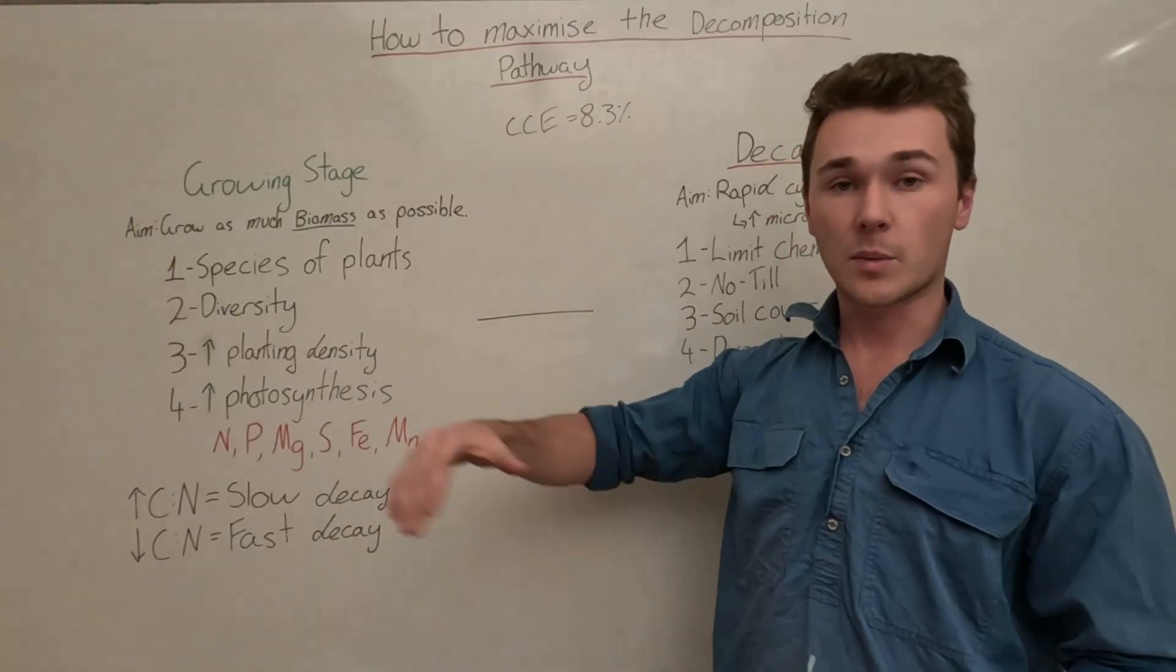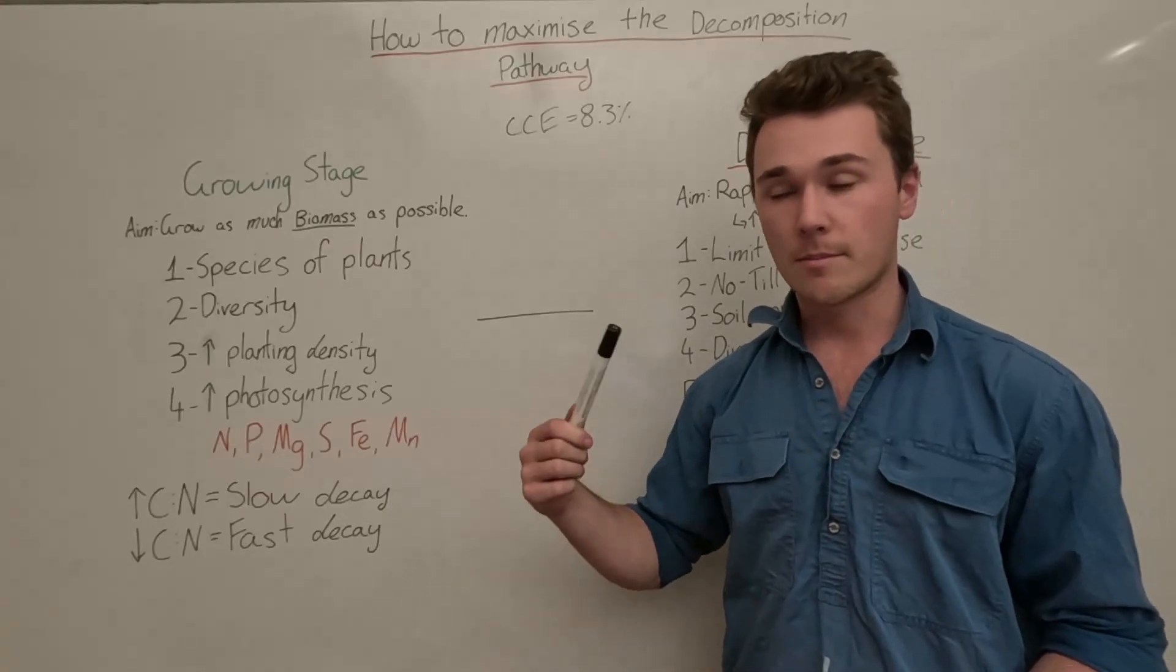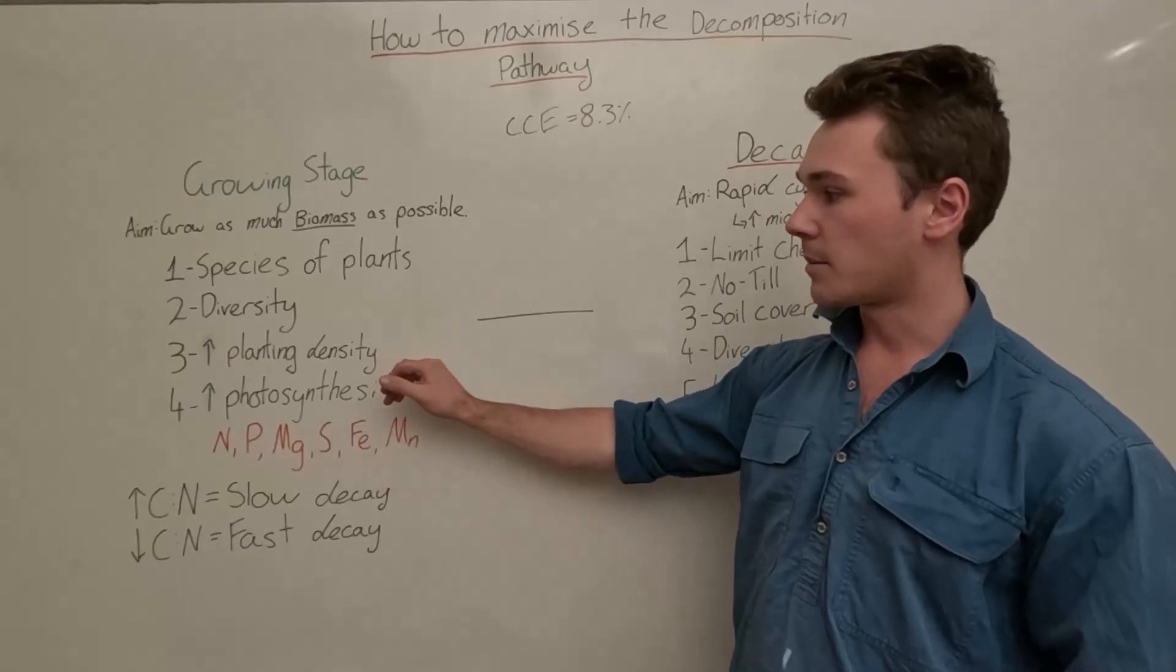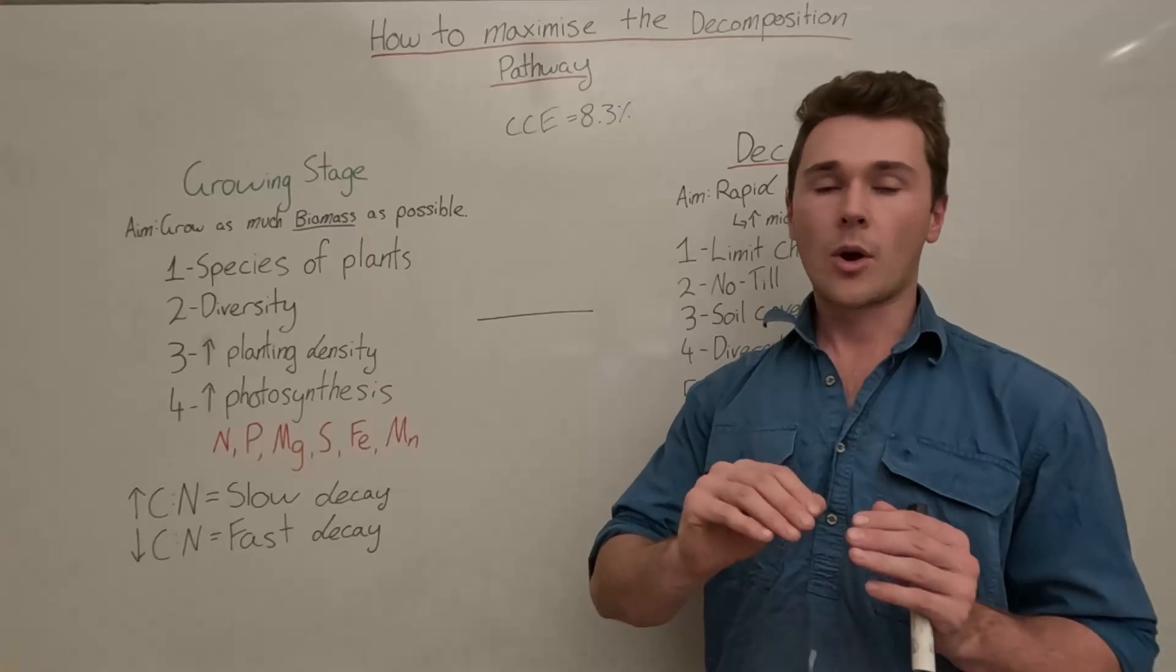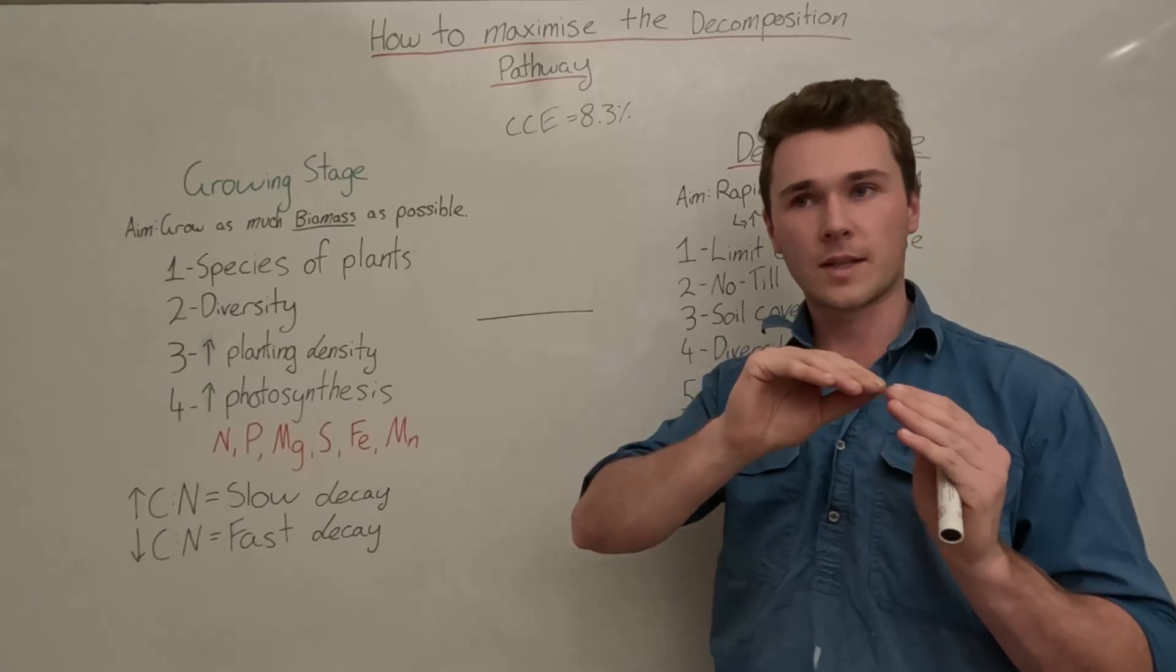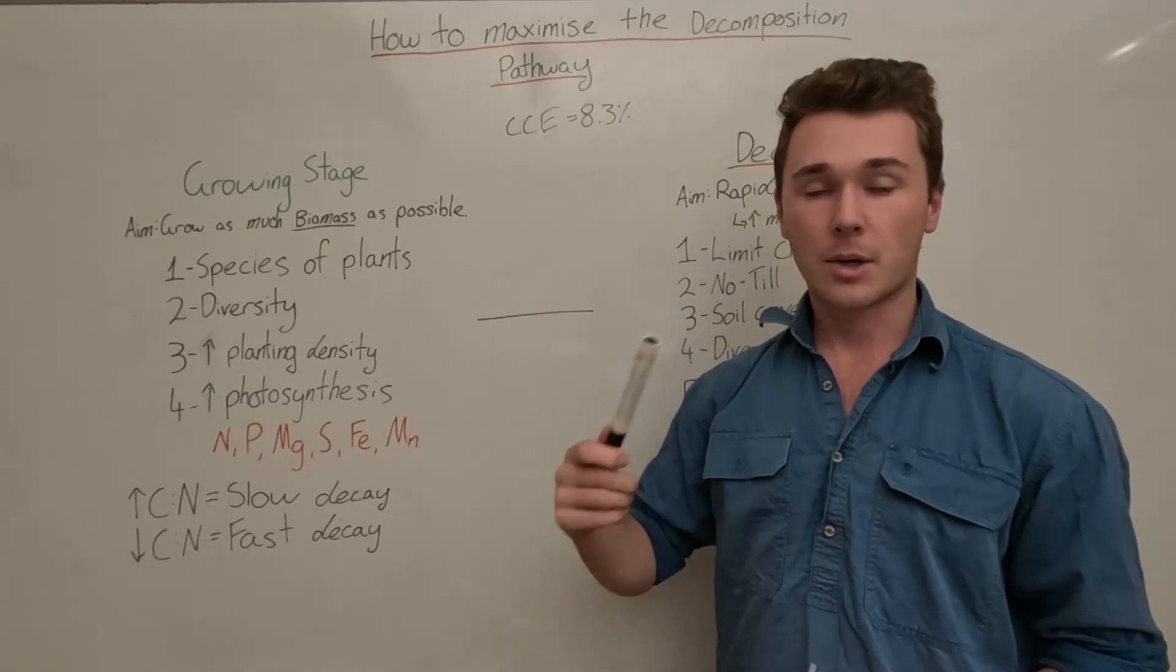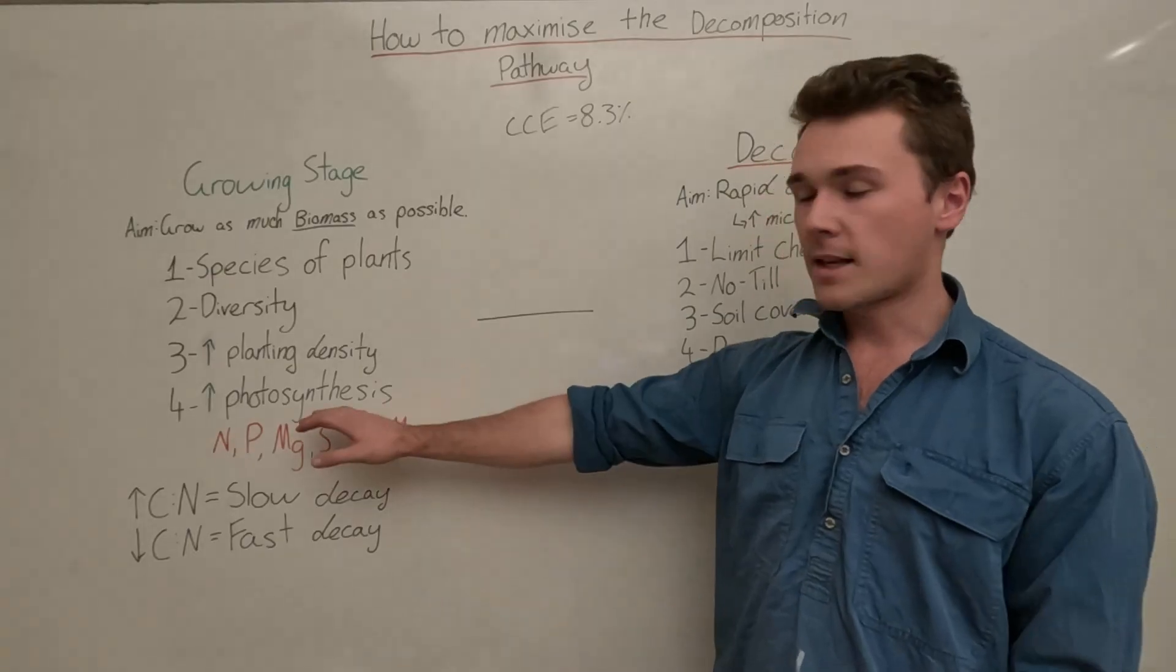When we're thinking about our cover crops, we want to make sure we have a really diverse cover crop that's going to increase the amount of biomass produced. We're going to want to increase our planting density if possible. Vegetative growth maxes out at a certain point, so making sure that we really get up to that point where we get the most biomass production is ideal.